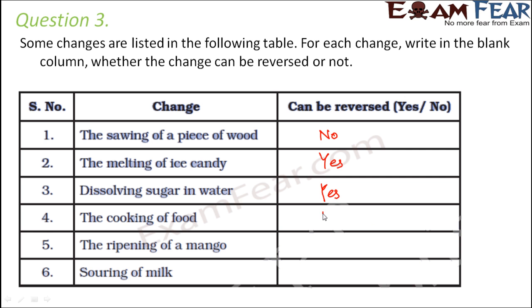Cooking of food is not reversible, because when you cook food you expose it to high temperature and many changes in chemical composition take place which cannot be reversed. Ripening of a mango — once a mango ripens, it will not become unripe again, so this is irreversible. Souring of milk is nothing but formation of curd; once curd is formed from milk, you cannot get the milk back again, so this is also not reversible.